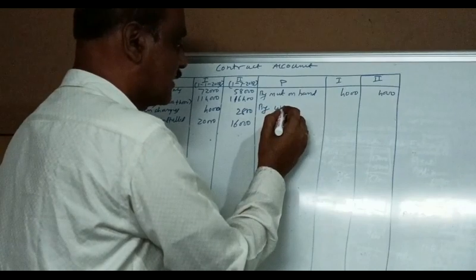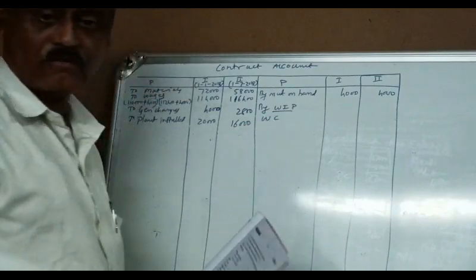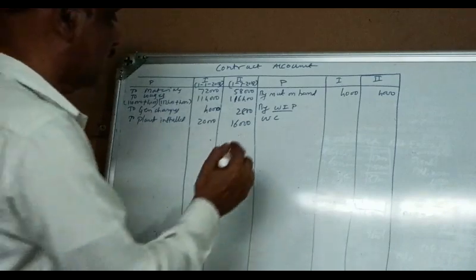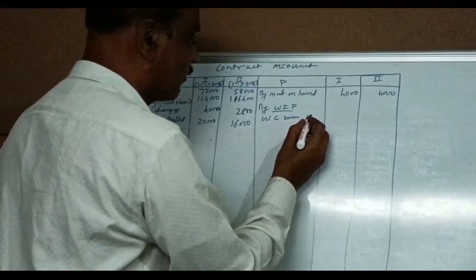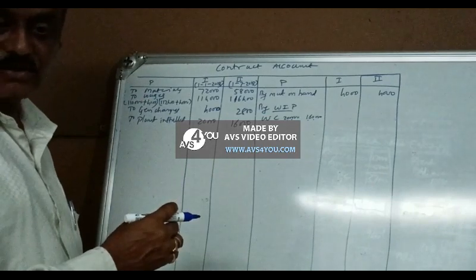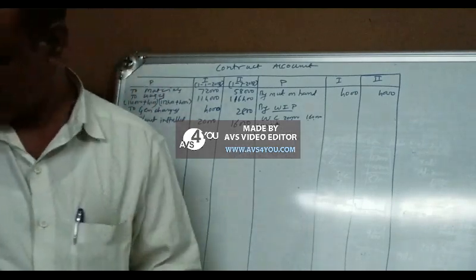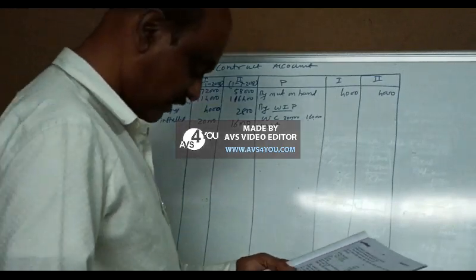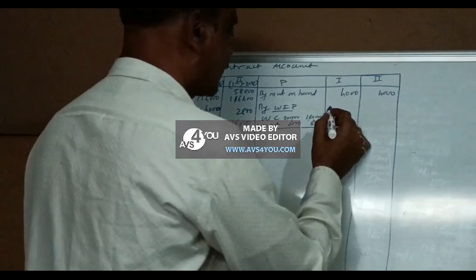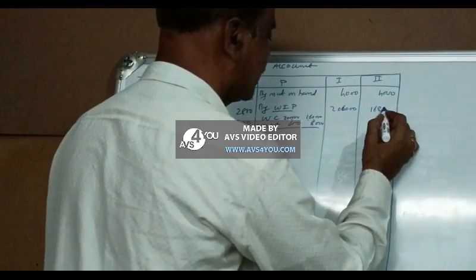Now work in progress on the credit side. Work certified for first contract: two lakhs. Work certified for second contract: one lakh sixty thousand. Work uncertified: sixty-six thousand and eight thousand respectively. So the work in progress figures are two lakhs six thousand and one lakh fifty-eight thousand.